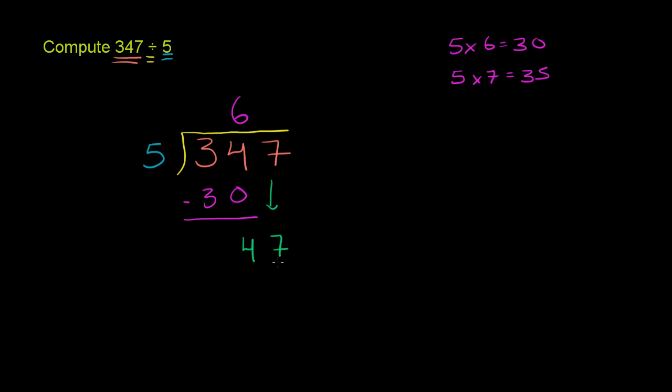5 goes into 47 how many times? Well, let's see. 5 times 8 is equal to 40, so that would work. But let's see if we can go in even more times. 5 times 9 is equal to 45. That'll work. That's still less than 47. And then we have 5 times 10 is 50.